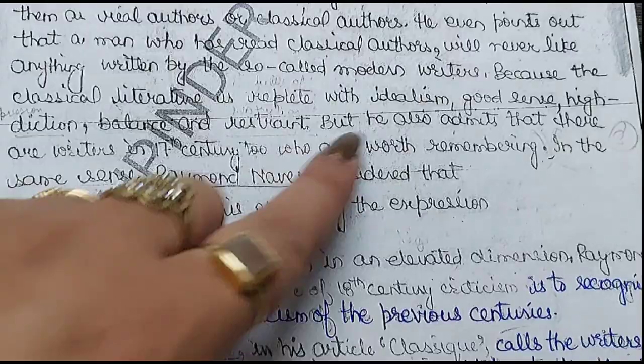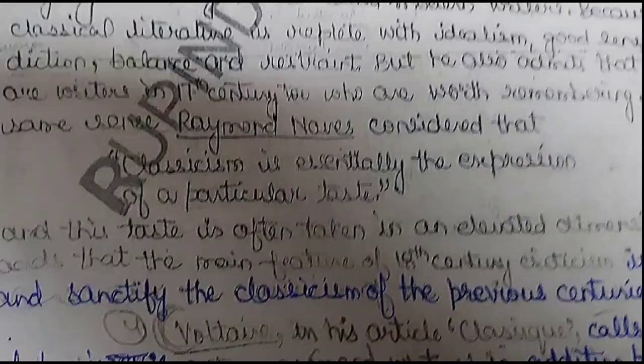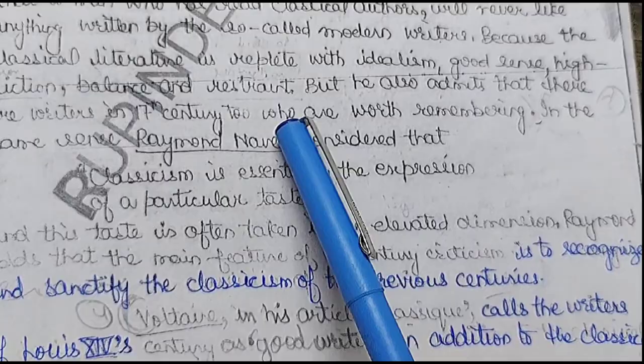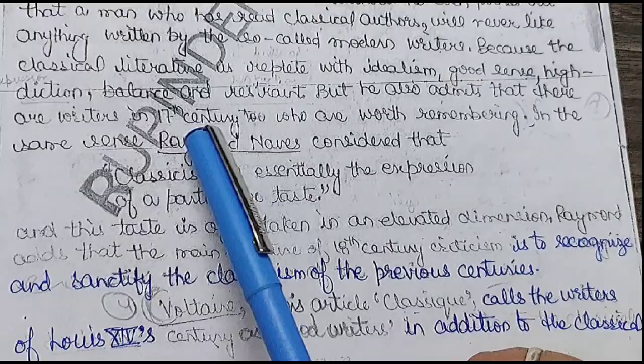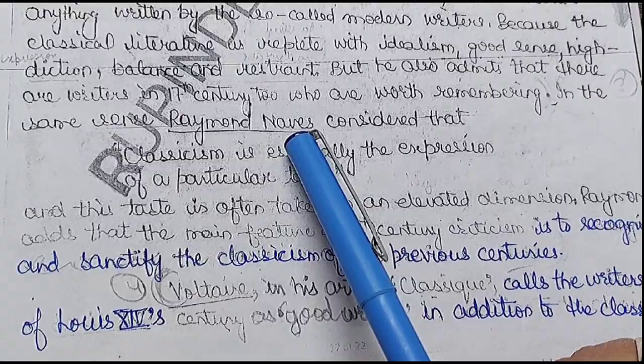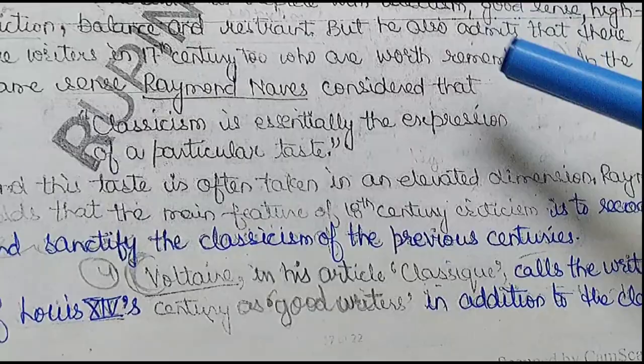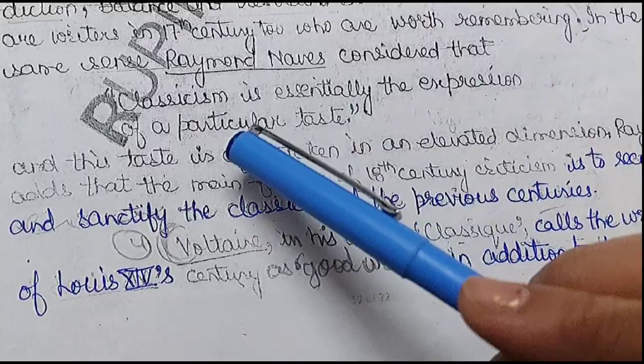Voltaire also admits that there are writers in the 17th century too who are worth remembering. In the same sense, Raymond Naves is our second scholar. Voltaire told us about classical authors — their idealism and good diction. Raymond Naves says that classicism is essentially the expression of a particular taste.